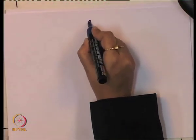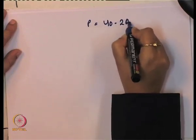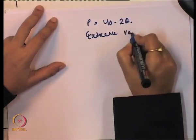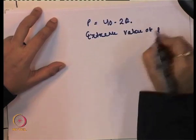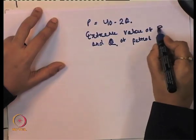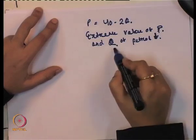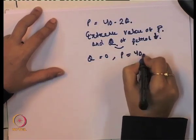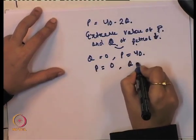First, we need to draw the demand curve. The information given is P = 40 − 2Q, so the slope is −2 and the intercept is 40. To find the extreme values: putting Q = 0 gives P = 40, and putting P = 0 gives Q = 20. Joining these points gives us the demand curve.